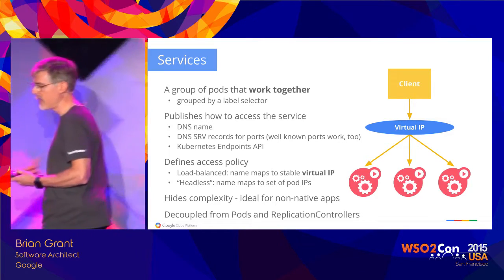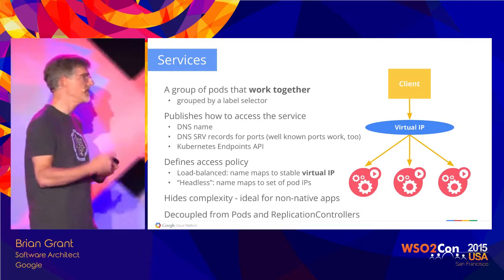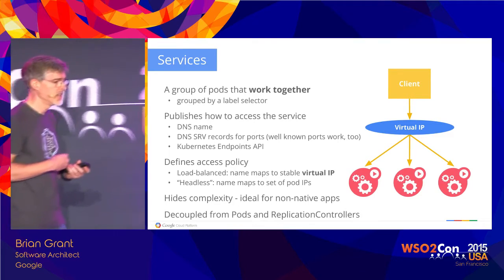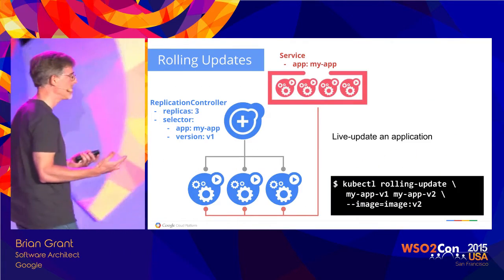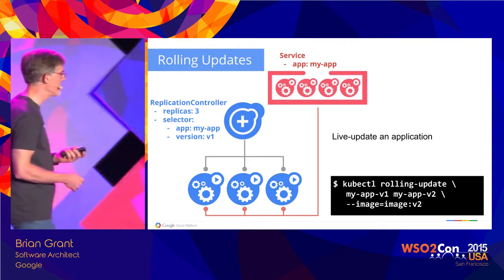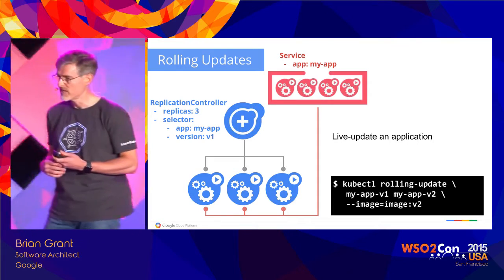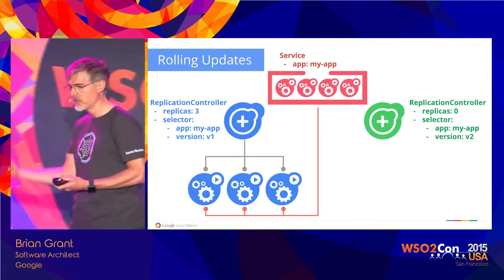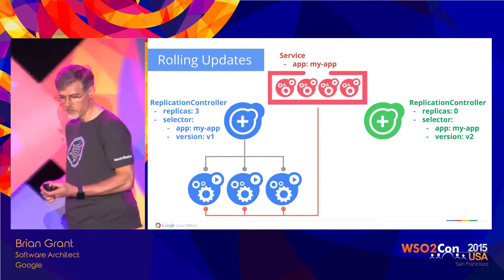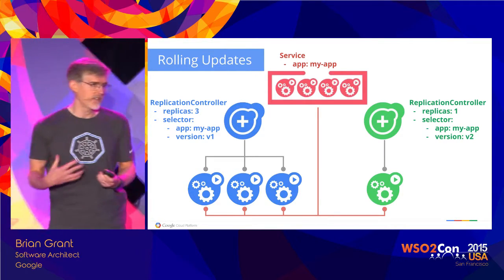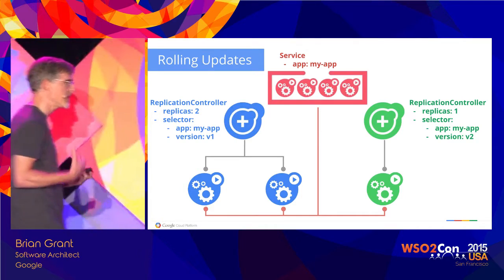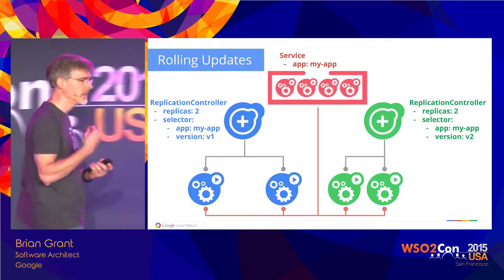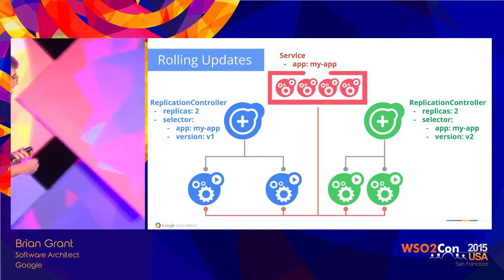Once you have an application deployed using a replication controller and service, a common thing you want to do is update that service in place without taking it out of service. Kubernetes provides a mechanism called rolling updates — you can roll out a new version of your application through the command line tool. Kubernetes creates a new replication controller and gradually scales it up while scaling the old one down, so at any given time you still have full capacity. Kubernetes monitors the health of the application as it replaces individual instances to make sure it doesn't take down your service.